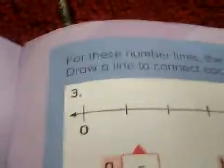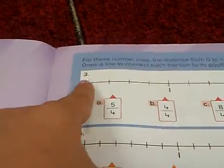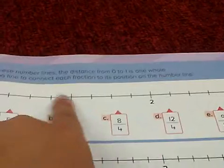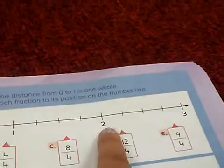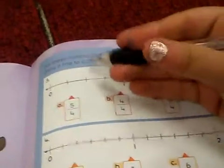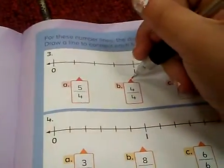And right now it says, for these numbers lines, the distance from 0 to 1 is 1-0. So, distance from right here to here is 1-0, and the distance from here to here is 1-0. So it says, draw a line to connect a fraction to its position on the number line. See, let's count how many it's broken up. 1, 2, 3, 4, broken up to 4. Always want to make sure you count the spaces before you do anything. So 4-4 is, of course, 1, so I'm just going to drag it to 1.